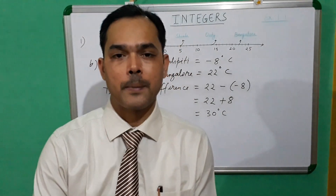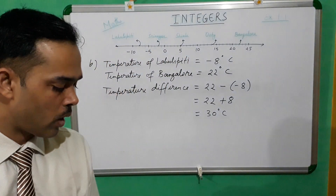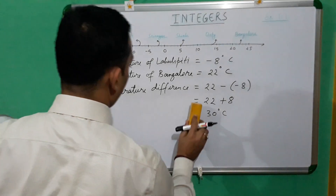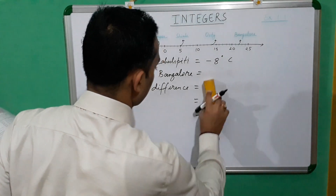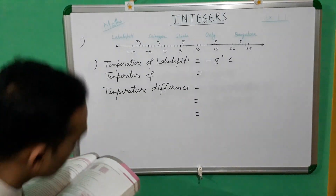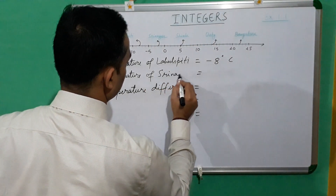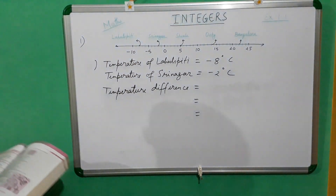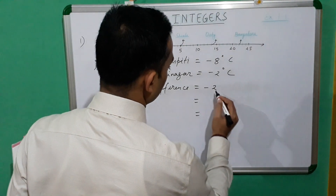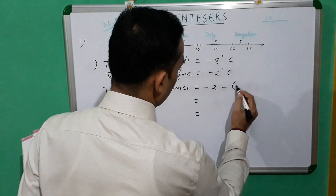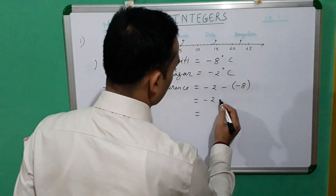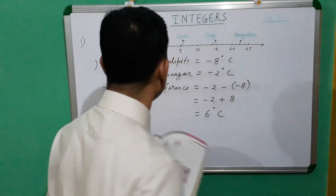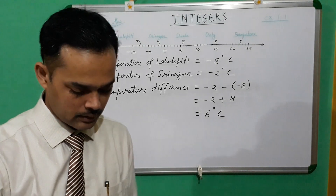After Part B, let us talk about Part C. Here it is asked: what is the temperature difference between Laul Spiti and Srinagar? In Part C, the temperature difference of Laul Spiti and Srinagar. The temperature of Srinagar is minus 2 degrees Celsius. Since minus 2 is greater than minus 8, we take minus 2, then minus minus 8. Minus into minus becomes plus, so plus 8. Thus the temperature difference between Srinagar and Laul Spiti is 6 degrees Celsius.